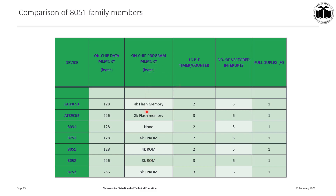Regarding on-chip program memory: the 89C51 has 4K flash memory, while the 89C52 has 8K flash memory — double. The 8031 is ROM-less; you must connect additional external ROM memory. The 8751 has 4K but it is EEPROM memory. The 8051 has 4K ROM memory. The 8052 has 8K ROM memory, double that of the 8051. The 8752 has 8K but it is EEPROM memory.